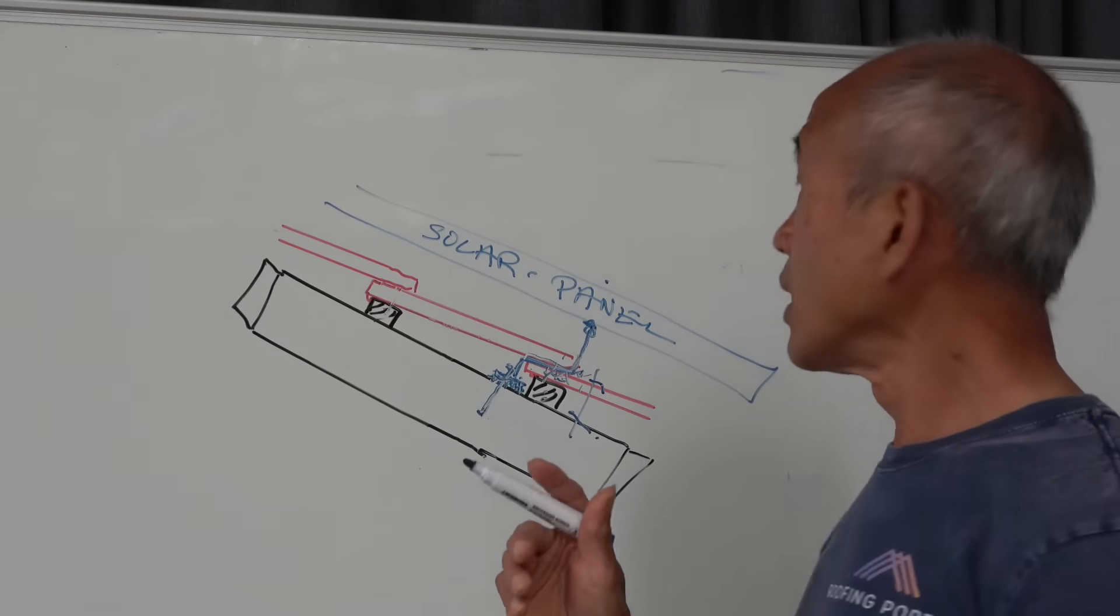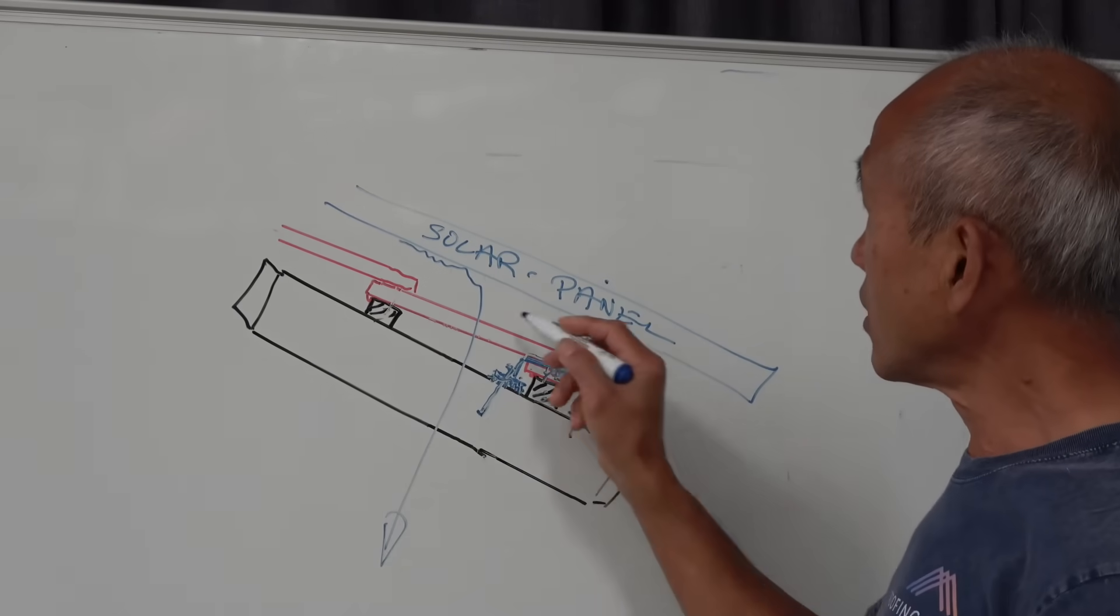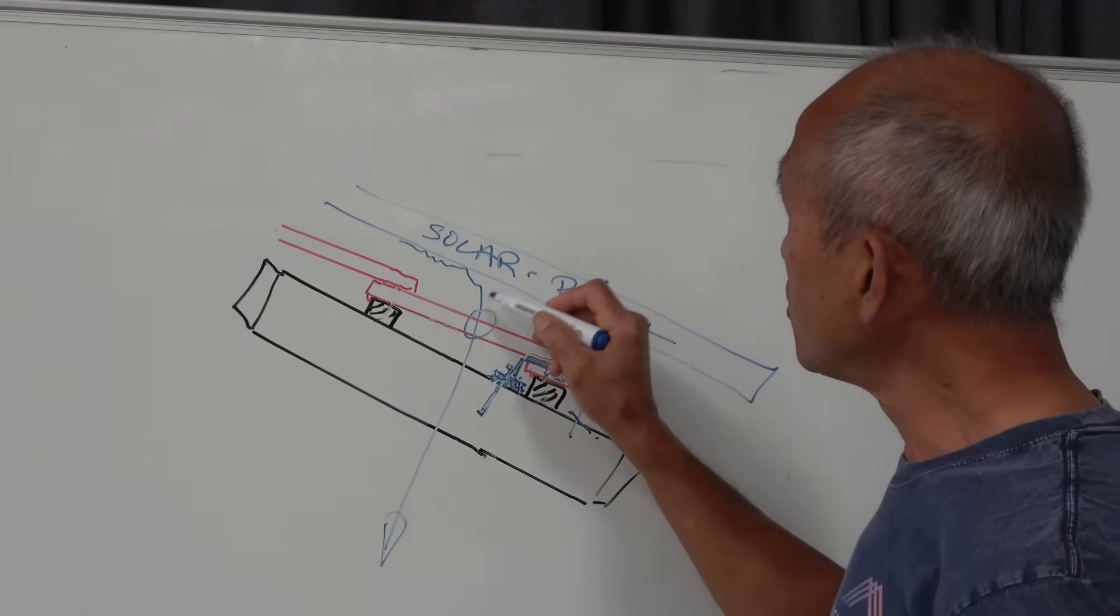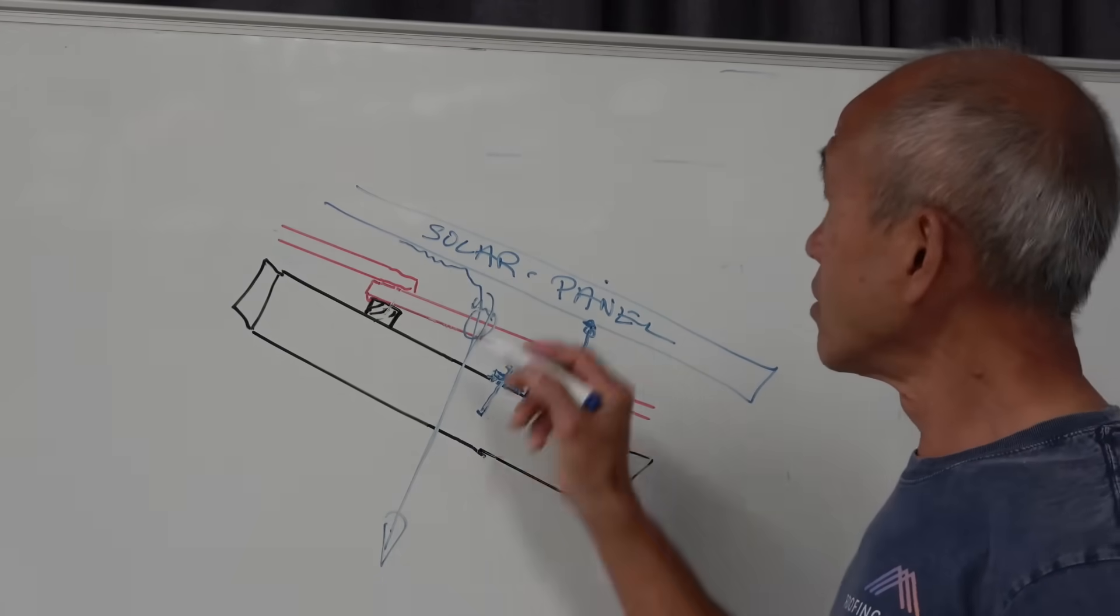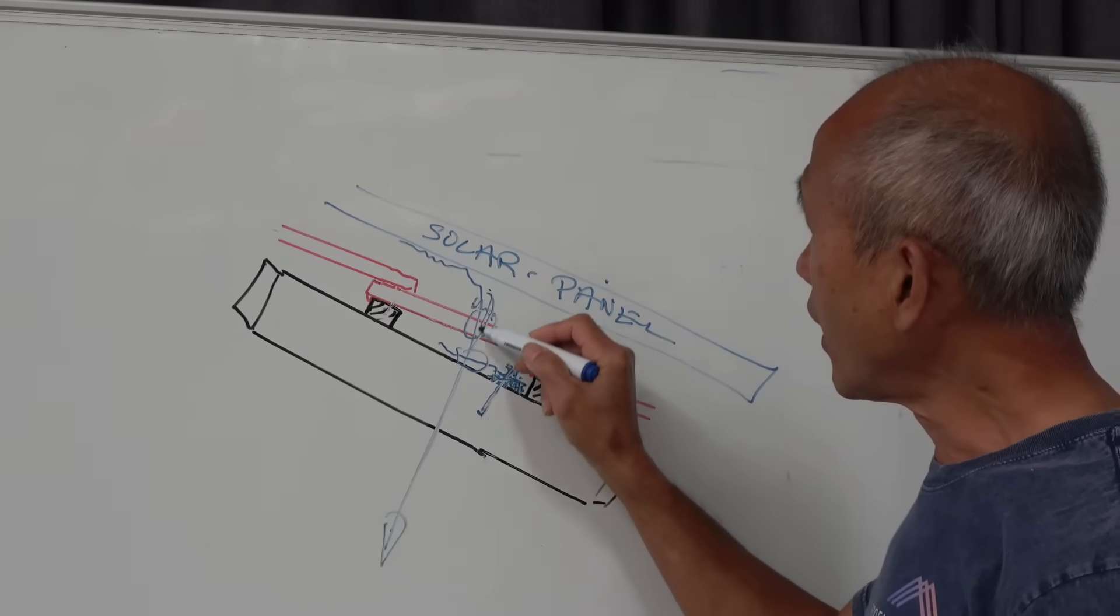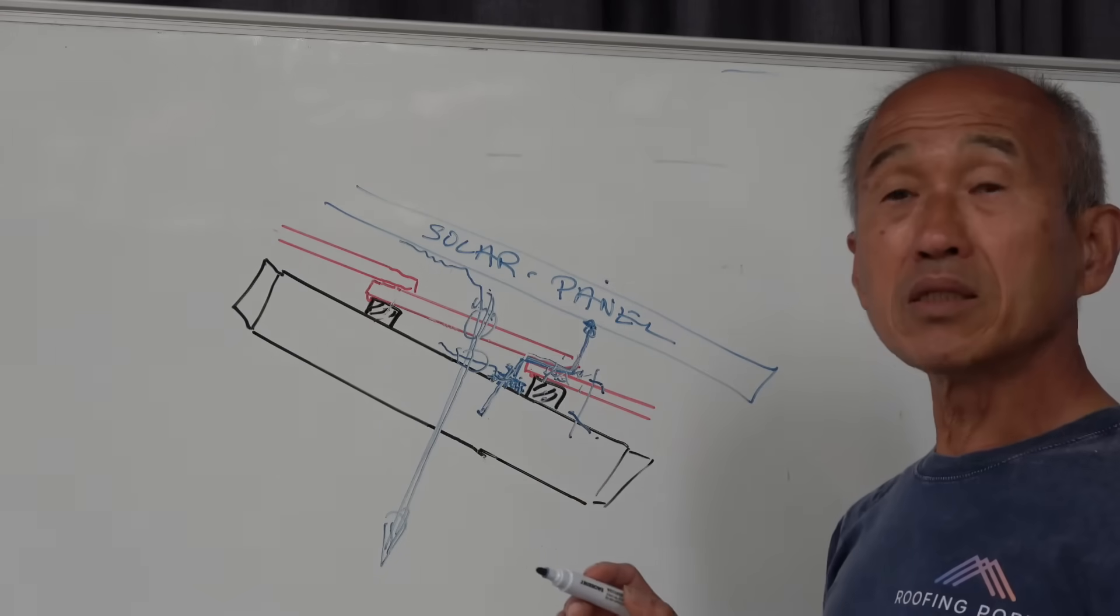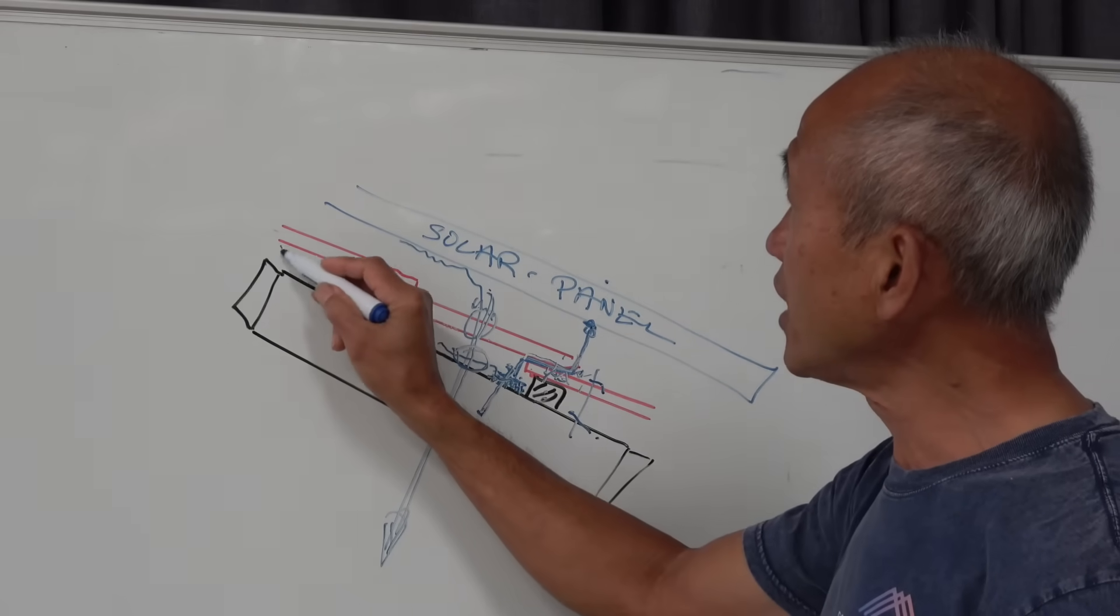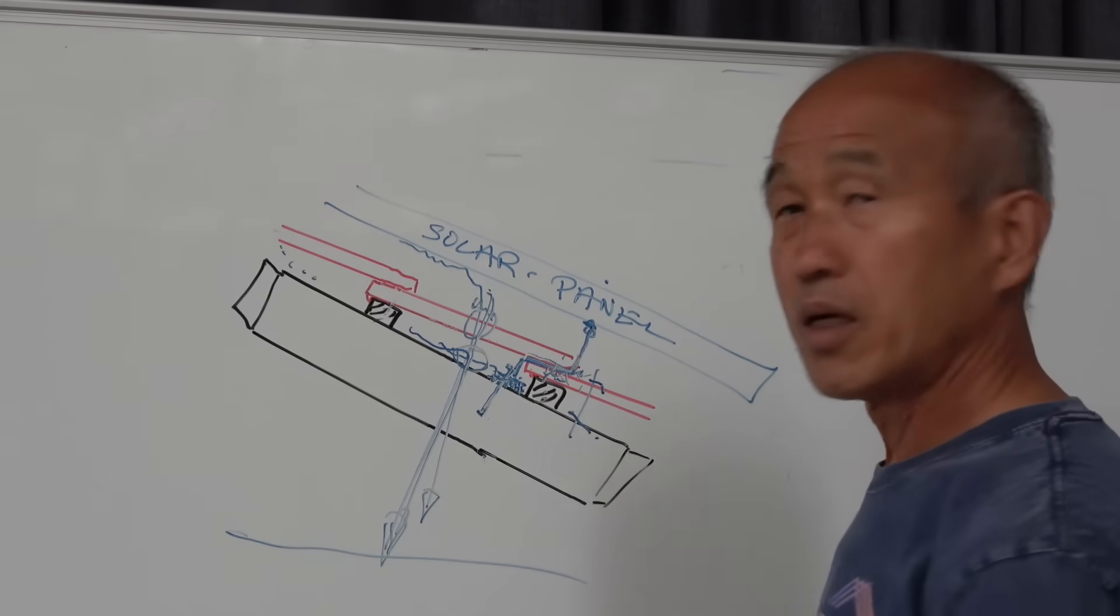Now the second thing that happens is that the solar panels are wired into the house. So somewhere in here you need to put a hole through the tile and that means you've got a flash around this conduit that goes through the tile and through the sarking. You've got to cut a hole in the sarking and then pull your conduit in. Now what it means is that as soon as you've got a hole in the sarking, potentially if you get any leakage up here, the water goes through the hole in the sarking and you've got a roof leak.